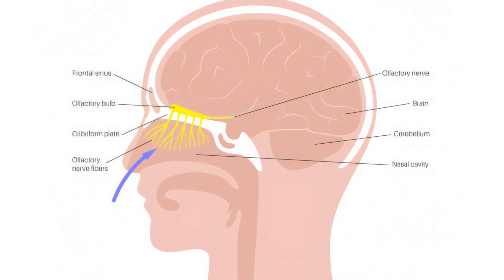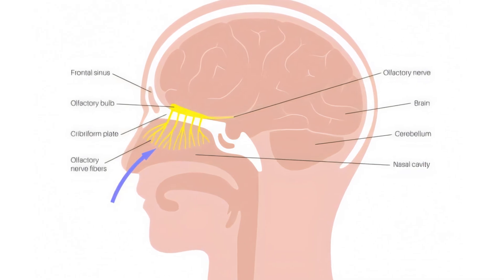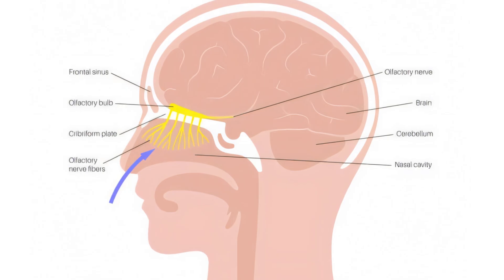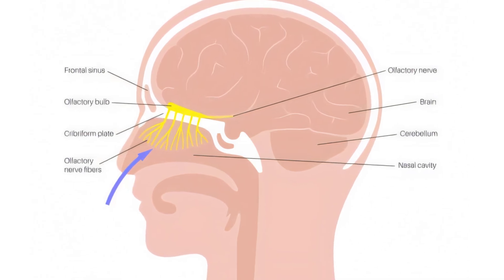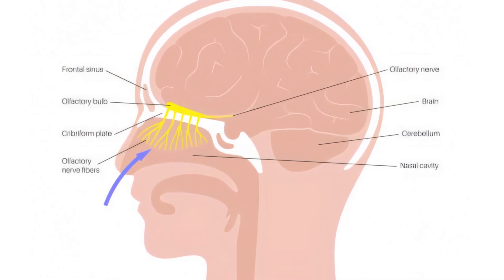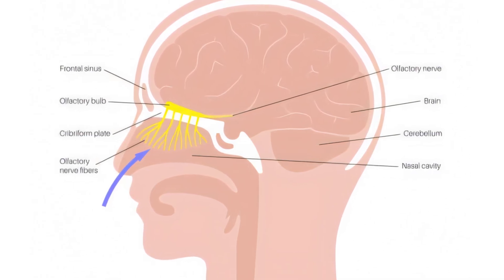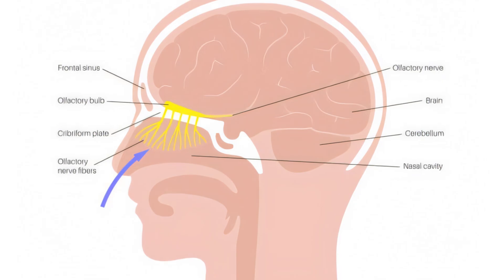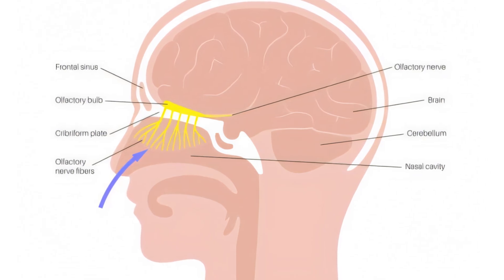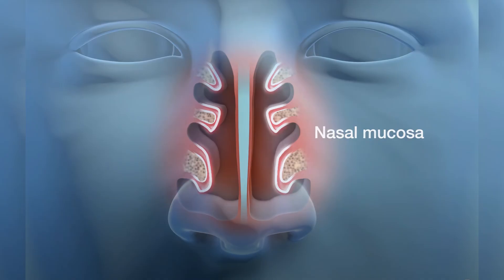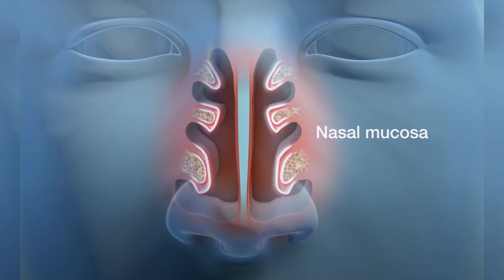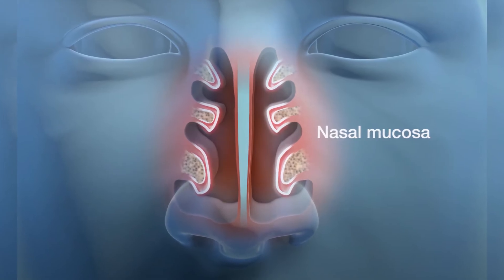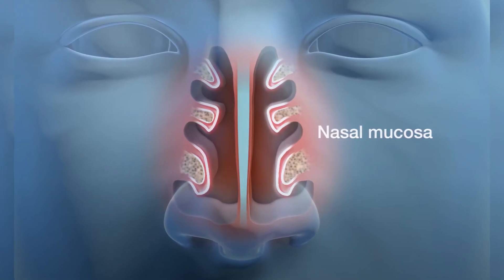Within the nose, there are also the olfactory receptors, which are responsible for detecting smell. These receptors are located at the top of the nasal cavity and send signals to the brain via the olfactory nerve. In addition, the nose contains mucus membranes that produce mucus, which helps trap dust and pathogens.